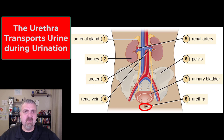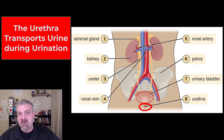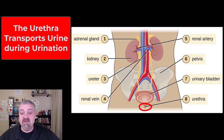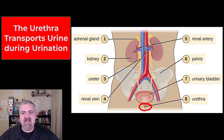And then we have the urethra. So we go from the kidneys to the ureters to the bladder, and now we're at the urethra. The urethra is going to be for the passage of urine from the bladder to the toilet or wherever. When we talk about the urethra, the main thing we discuss is how the female urethra is so much shorter and straighter that it's much easier for fecal contamination bacteria to get in, which is why women are much more likely to have urinary tract infections.